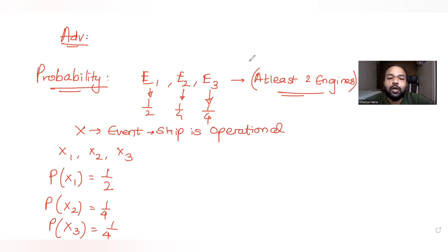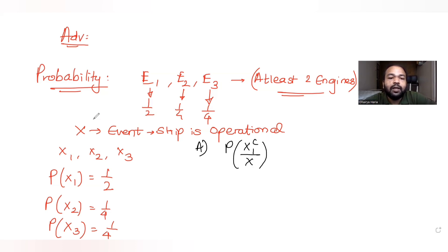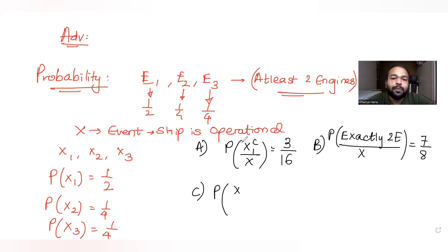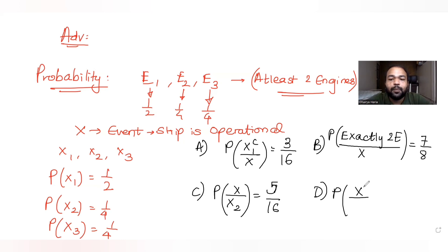We have been asked which of the following options are true — there can be more than one correct answer. Option A: probability of complement of X1 given X equals 3/16. Option B: probability of exactly two engines functioning given X equals 7/8. Option C: probability of ship operational given X2 equals 5/16. Option D: probability of ship operational given X1 equals 7/16.